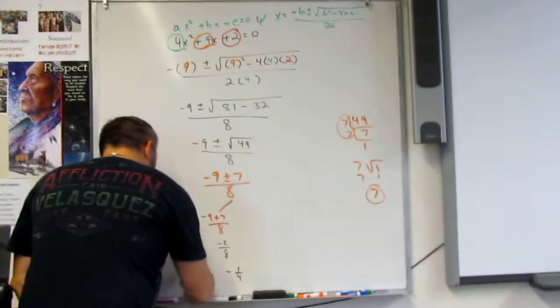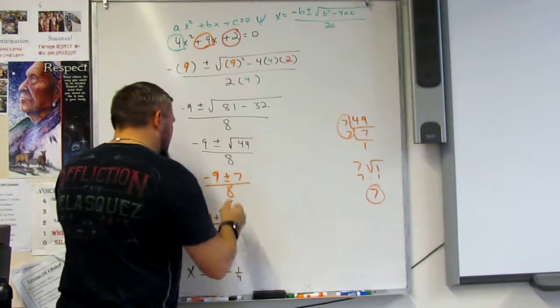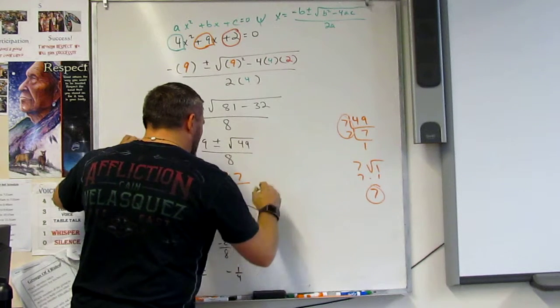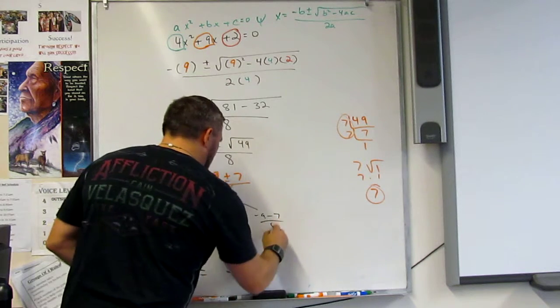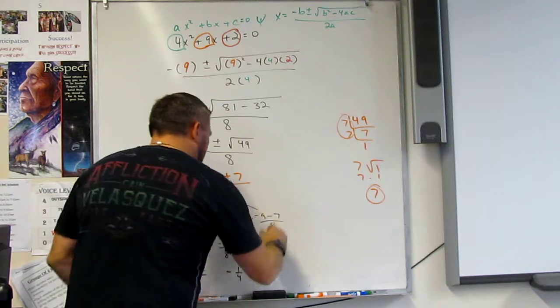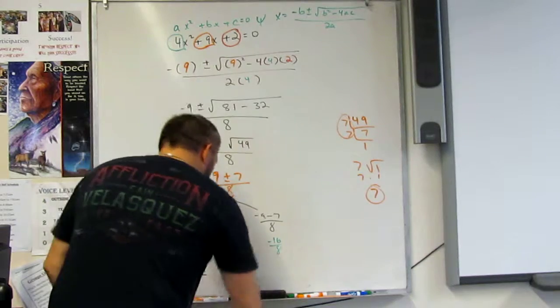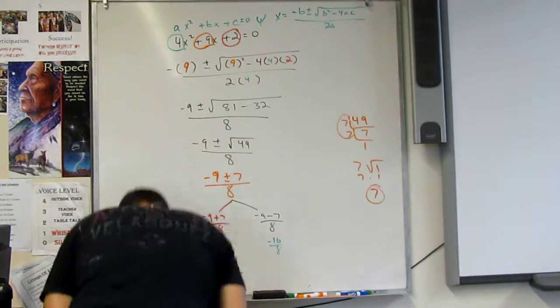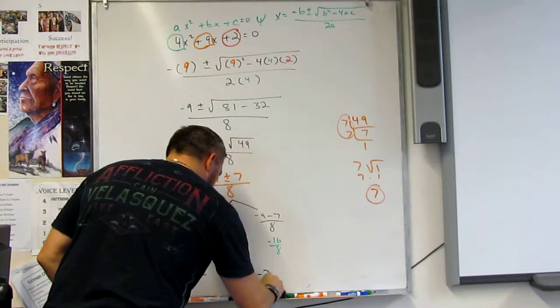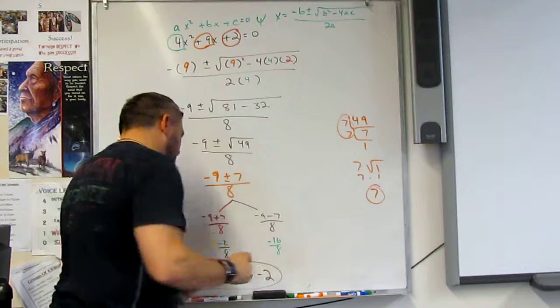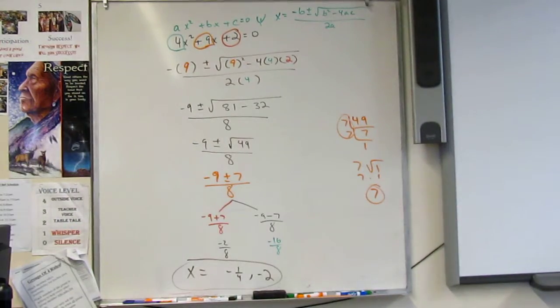So x is going to equal negative 1 fourth, and it also equals negative 9 minus 7 over 8. So that's going to be minus 16 over 8. So that's going to be minus 2. And so x is equal to both negative 1 fourth and negative 2.